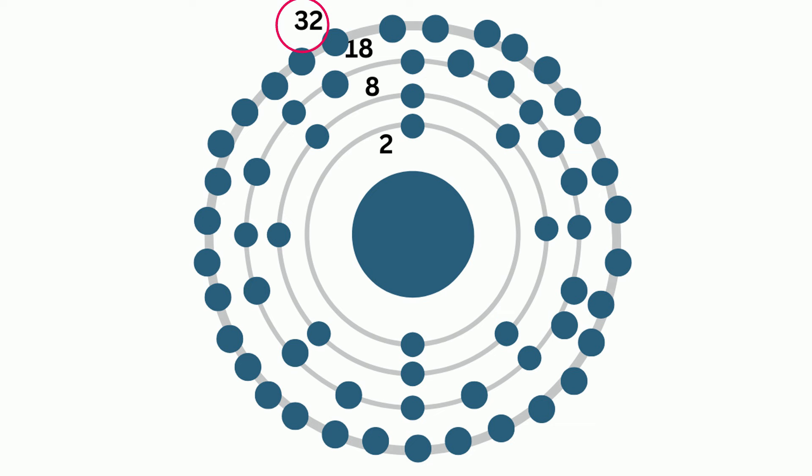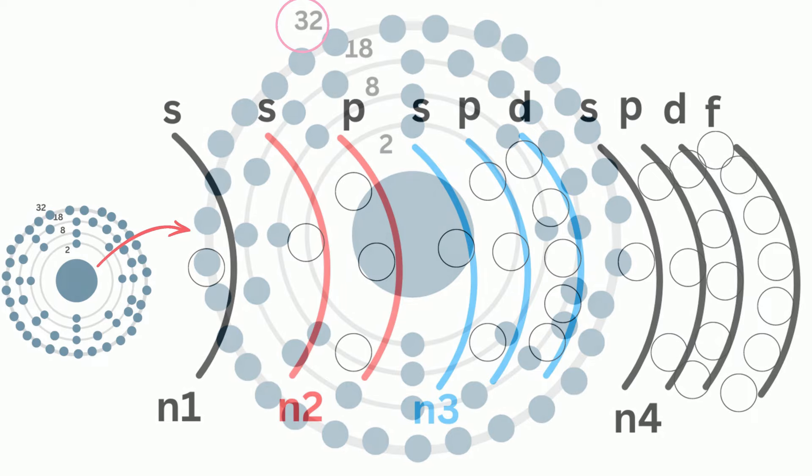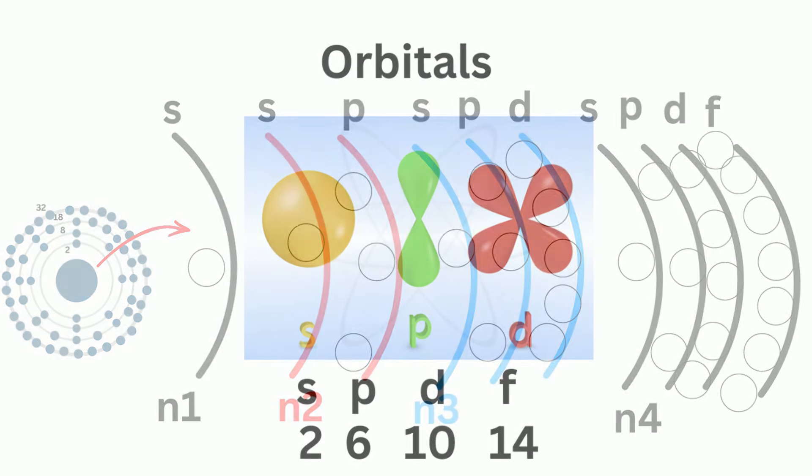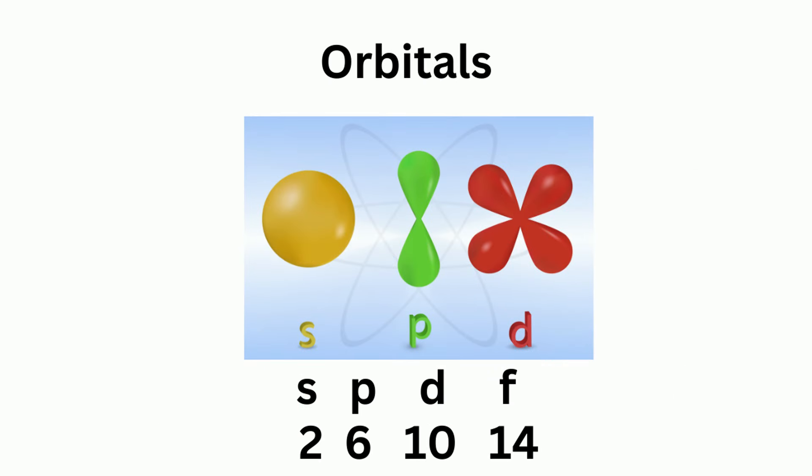Now, here's a picture of that. Now, within each shell, you have sublevels. And the sublevels are S, P, D, and F, and they can each hold a maximum number of electrons.